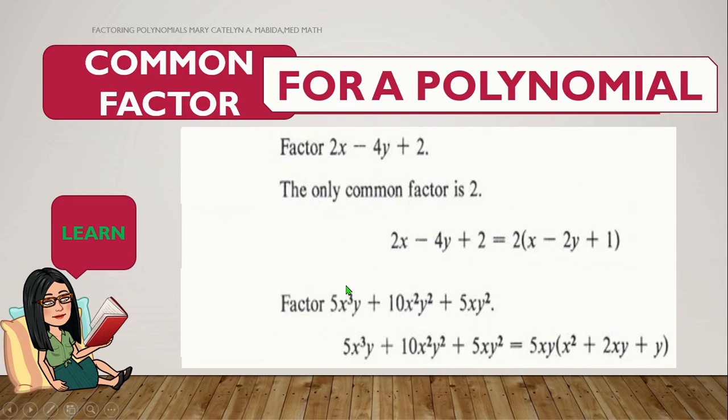Now, the second one. 5x cubed y plus 10x squared y squared plus 5xy squared. And their common monomial factor? That's correct. It's 5xy. And so, 5x cubed y divided by 5xy is x squared. 10x squared y squared divided by 5xy is 2xy. 5xy squared divided by 5xy is y. You got it right.